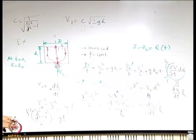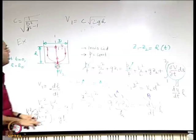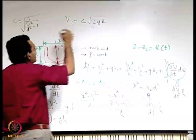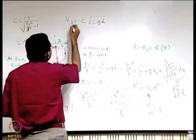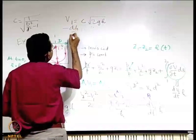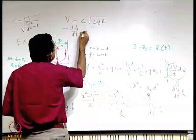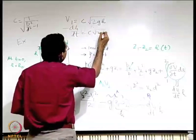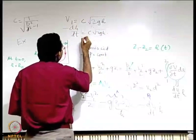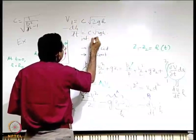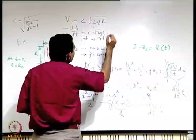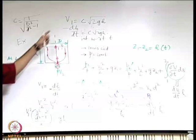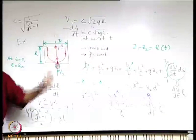We can complete the solution by writing -dh/dt = C·√(2gh). Integrating with respect to time, you can find how h varies with t. This is straightforward integration.